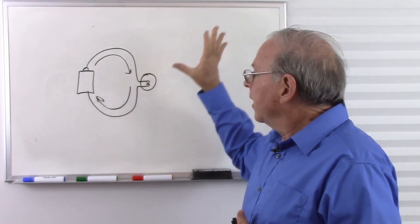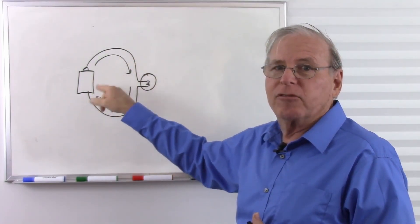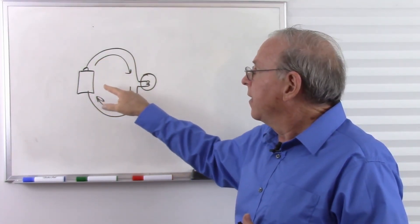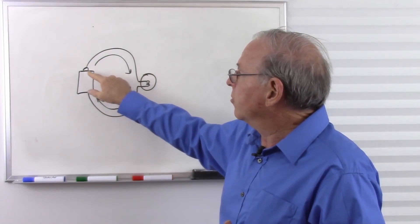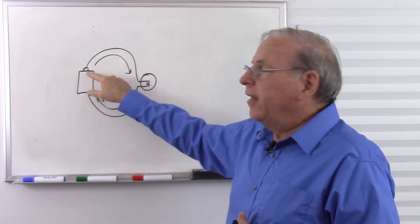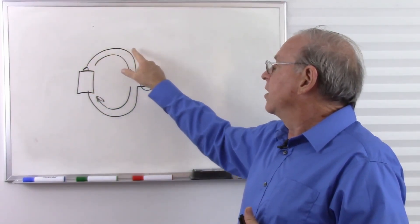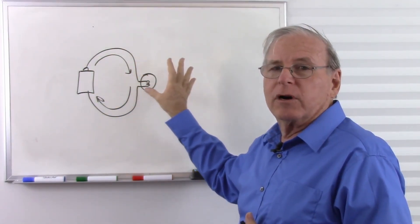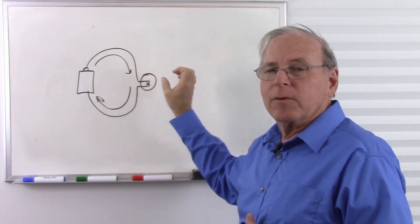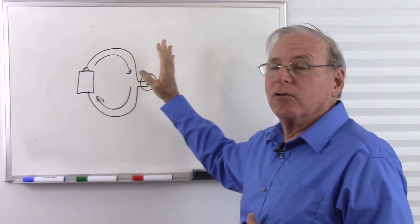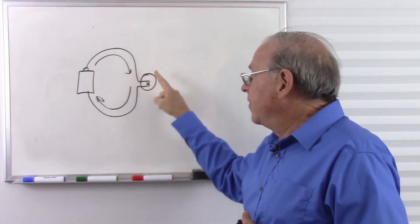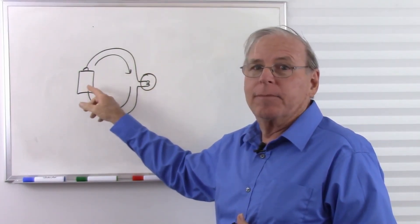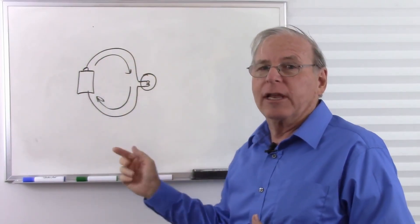So an electrical circuit consists of a pump — such as a battery or a generator — that exerts a pressure that forces the electricity around the circuit. We do a little work in the middle somewhere, such as a light bulb or a computer, and then we suck the electricity back into the pump to be circulated again.